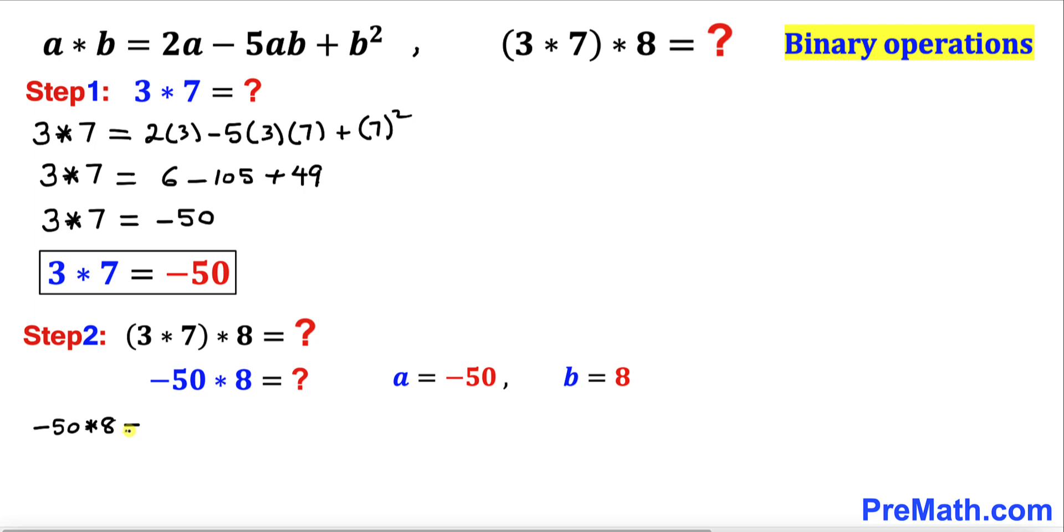So therefore, our negative 50 star 8 value is going to be, we are going to plug it in. So that is going to be 2 times a is negative 50, minus 5 times a is negative 50 times b is 8, plus b squared, in our case is going to be 8 squared.